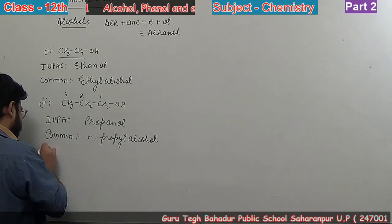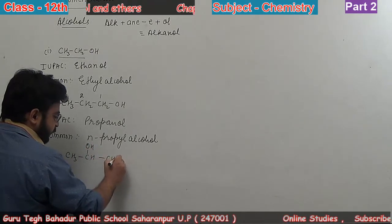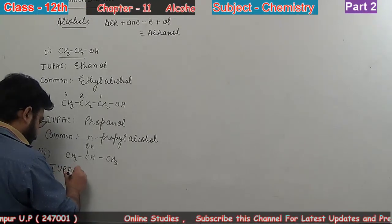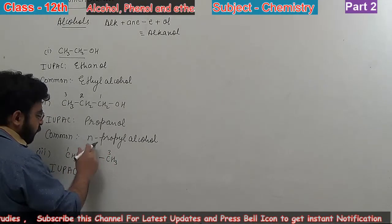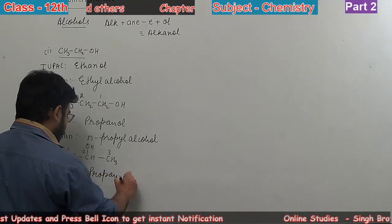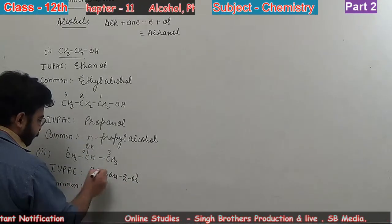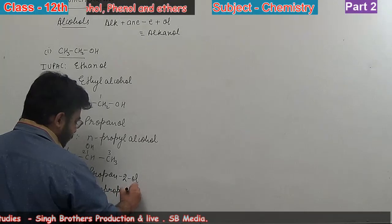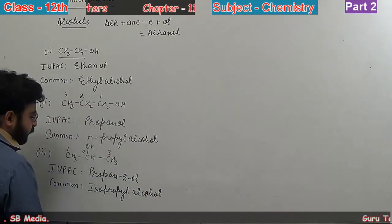Third one is CH3-CH(OH)-CH3. In this molecule there are also three carbons. For IUPAC name, we give the locant to OH: one, two, three. Position of OH is two, so the name is propan-2-ol. For common name, the alkyl group is isopropyl, so isopropyl alcohol.